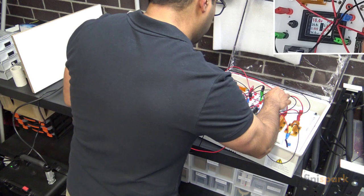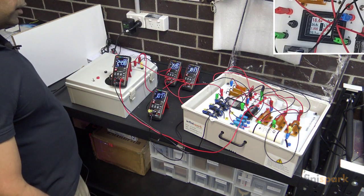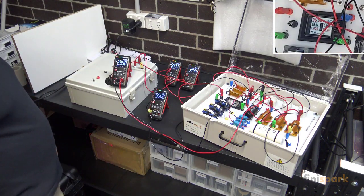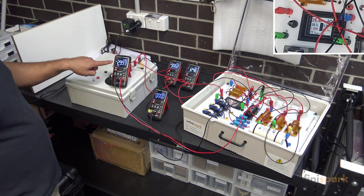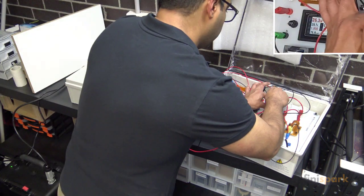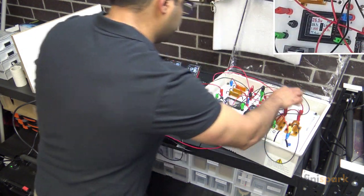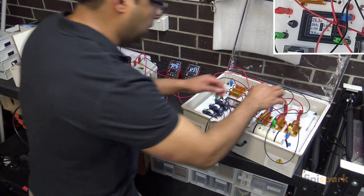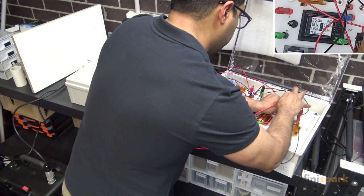Let's now disconnect the neutral and see what happens to the voltages. Disconnecting the neutral has changed our phase A voltage to about 30 volts. Phase B voltage should be roughly the same, about 30 volts, because both of those loads were the same.